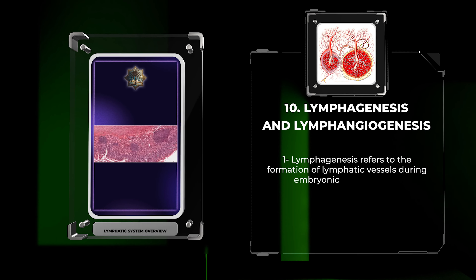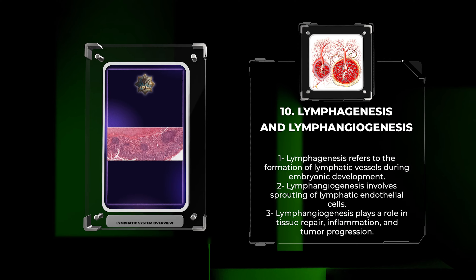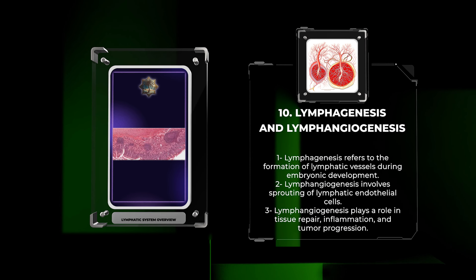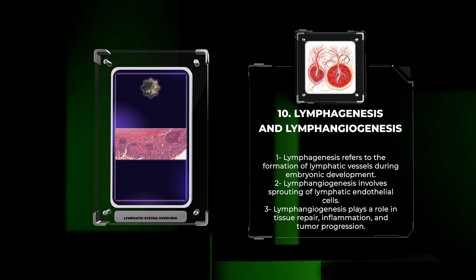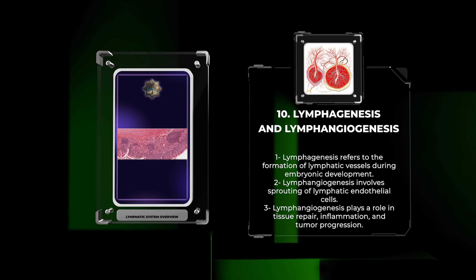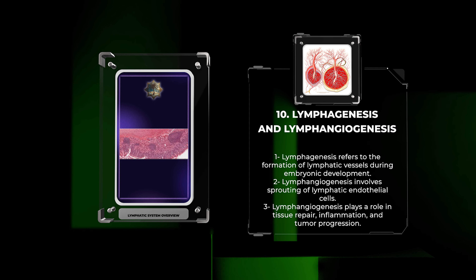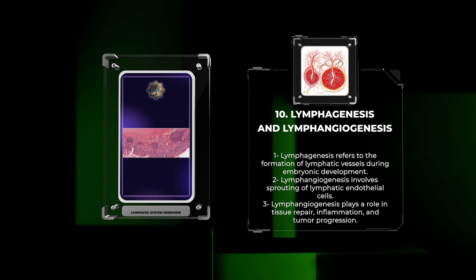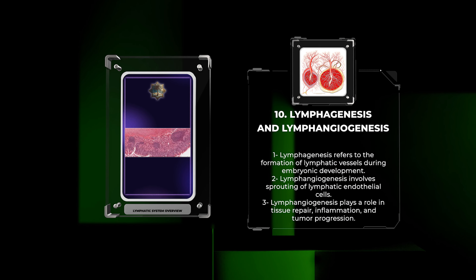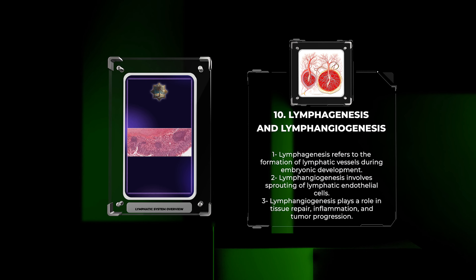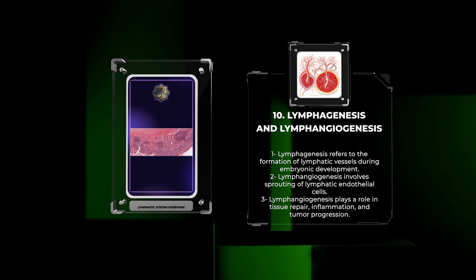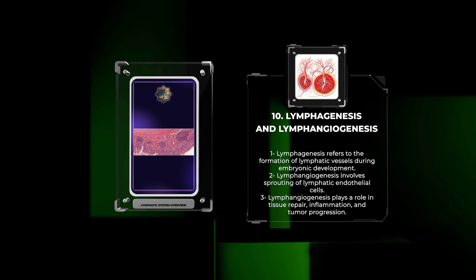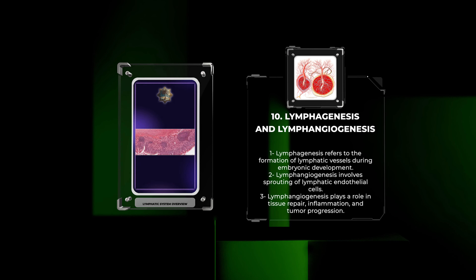Lymphogenesis refers to the formation and development of lymphatic vessels. During embryonic development, initial lymphatic vessels form through a process called lymphangiogenesis, which involves sprouting of lymphatic endothelial cells from pre-existing venous capillaries. Lymphogenesis also plays a significant role in tissue repair, inflammation, and tumor progression. Understanding these processes provides insights into potential therapeutic targets for conditions related to abnormal lymphatic vessel growth.